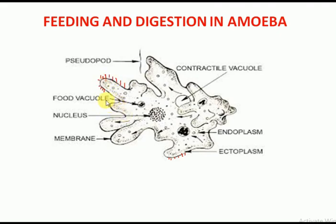Amoeba has pseudopodia — finger-like structures. When food is detected, the pseudopodia extend around the food to engulf it. The food is then surrounded and absorbed. Digestive juices are secreted to break down the complex food into simpler substances. Undigested food is expelled from the cell.